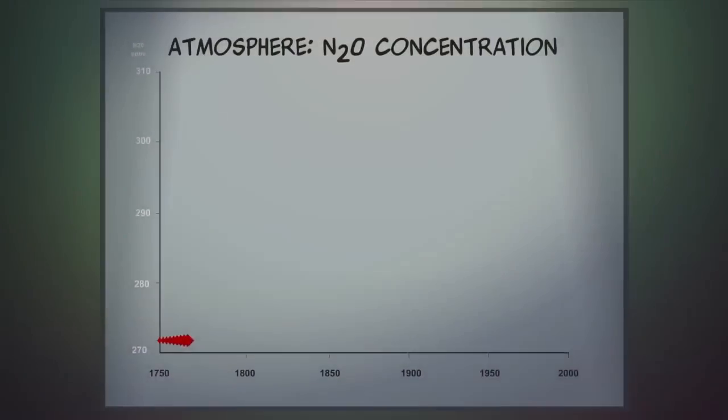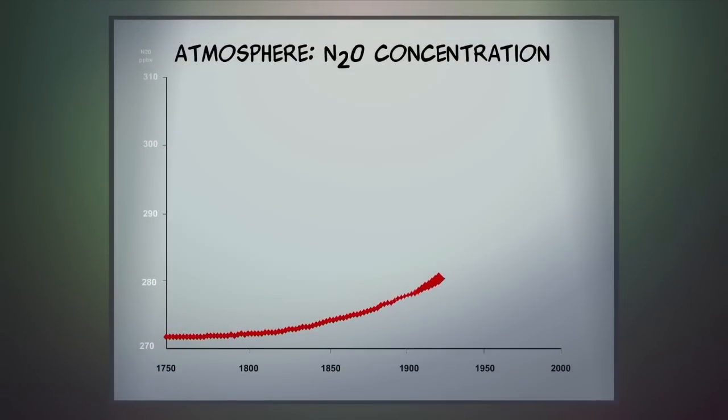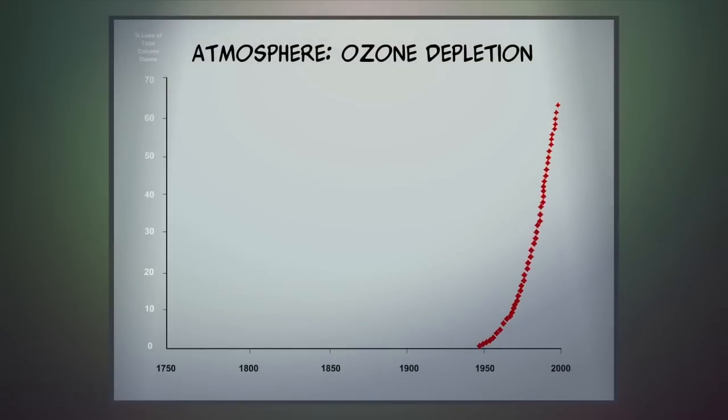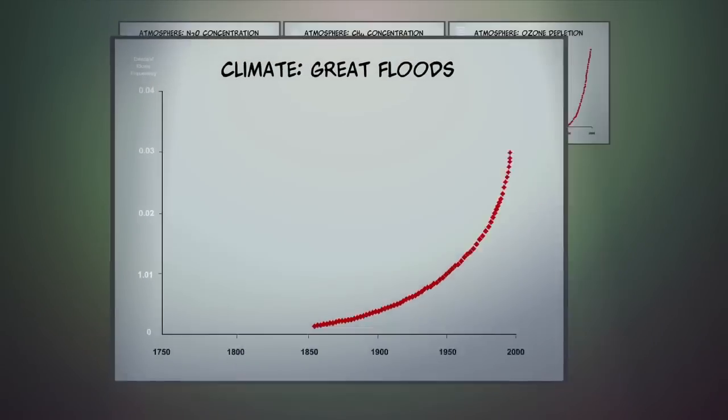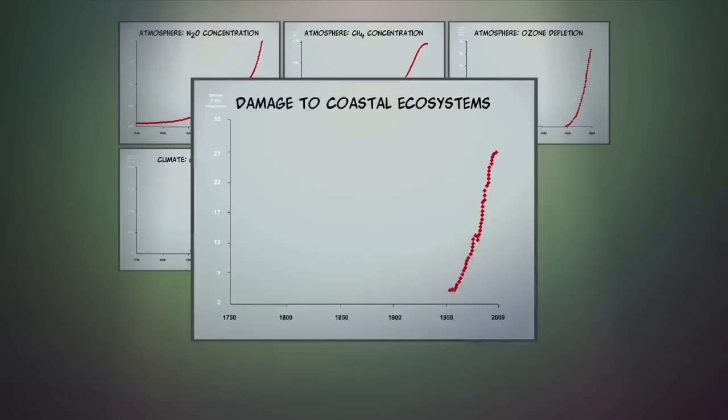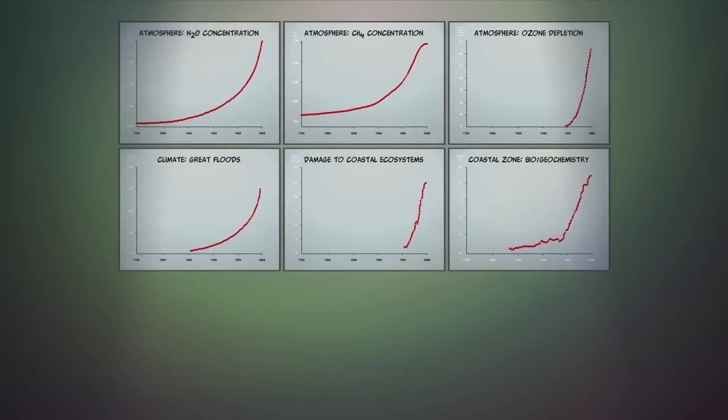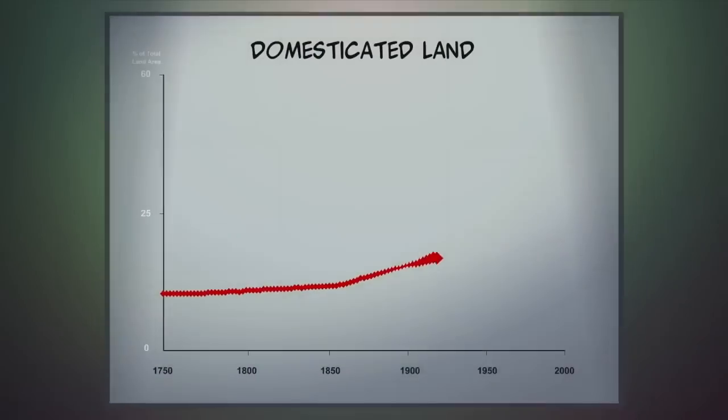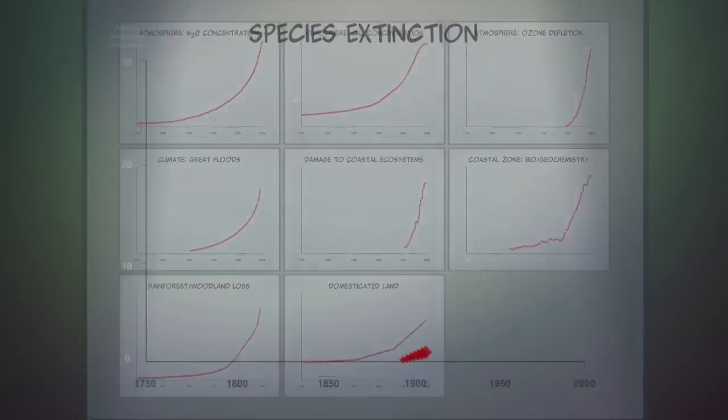Economic expansion has resulted in increases in atmospheric nitrous oxide and methane, ozone depletion, increases in great floods, damage to ocean ecosystems, including nitrogen runoff, loss of rainforest and woodland, increases in domesticated land, and species extinctions.